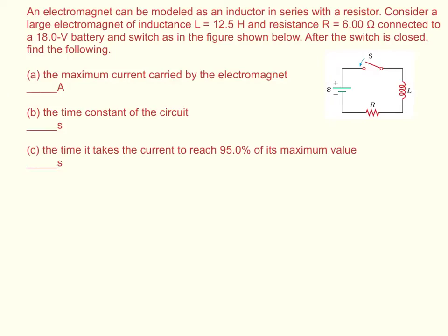An electromagnet can be modeled as an inductor in series with a resistor. Consider a large electromagnet of inductance L = 12.5 Henrys and resistance R = 6 ohms, connected to an 18-volt battery and switch as in the figure shown below. After the switch is closed, find: the maximum current carried by the electromagnet, the time constant of the circuit, and the time it takes the current to reach 95% of its maximum value.